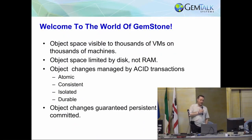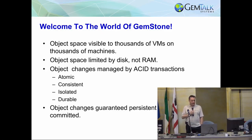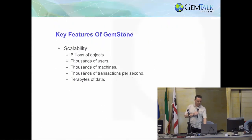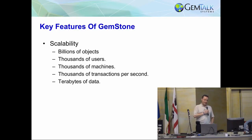In GemStone, we expand all these issues to thousands of VMs, potentially on thousands of machines. The space is now limited by disk space instead of memory. There are transactions, so that once something has been committed to GemStone you know it's saved, and transactions are ACID. Once an object is committed to the database, it's guaranteed to be persistent. Key features include scalability — we have customers with billions of objects running in production, thousands of users, thousands of machines, thousands of transactions a second, and literally terabytes of data. This is really Smalltalk at large.